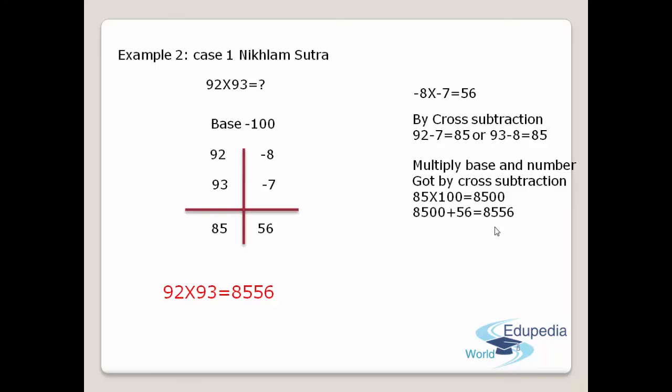Keep in mind: in upcoming examples, if the right column answer has more digits than the number of zeros in the base, you will have to follow a different procedure. We are going to apply these types of procedures in upcoming examples. I think you have understood pretty well how to do multiplication of numbers by applying Nikhilam Sutra. Thank you.